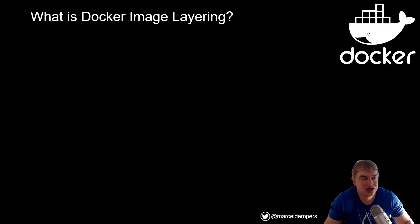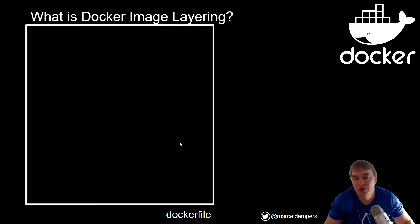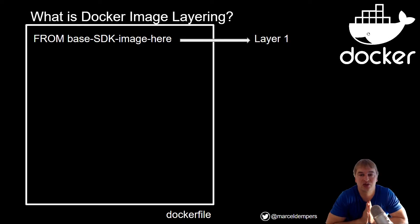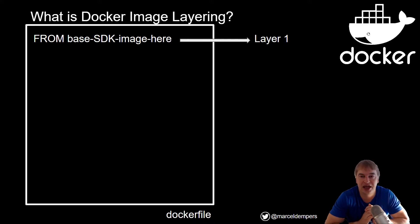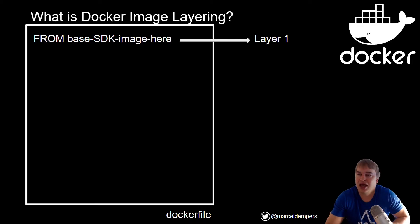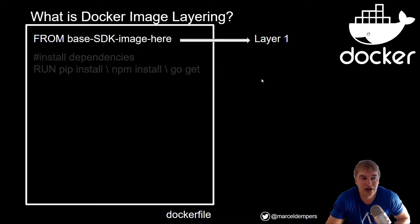What is Docker image layering? Up until now we've actually used image layering. We have a Dockerfile with a FROM statement in every one of those languages — it's on GitHub. Docker evaluates the Dockerfile line by line and statement by statement. It uses a hashing algorithm to give every line a unique identifier, and that becomes a separate unique layer — so the FROM statement forms layer one.